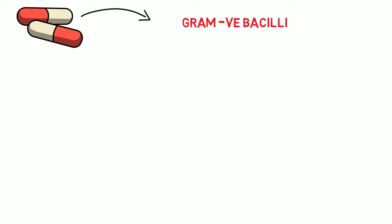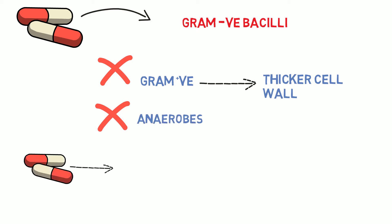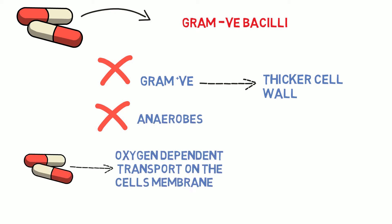These drugs primarily act on gram-negative bacilli and do not inhibit anaerobes. Aminoglycosides don't act on gram-positive bacteria because they have a comparatively thick cell wall. They don't act on anaerobes because aminoglycosides require an oxygen-dependent transport mechanism on the cell membrane to enter inside the cell.